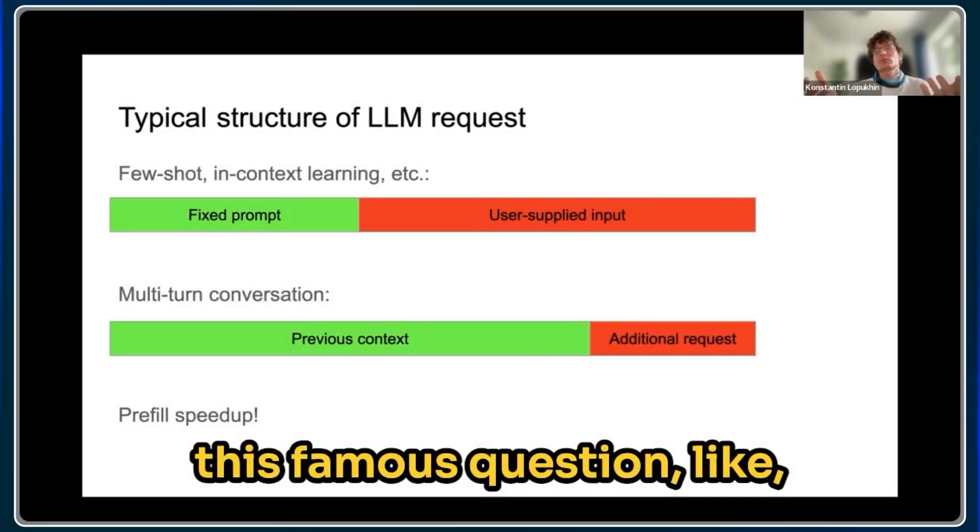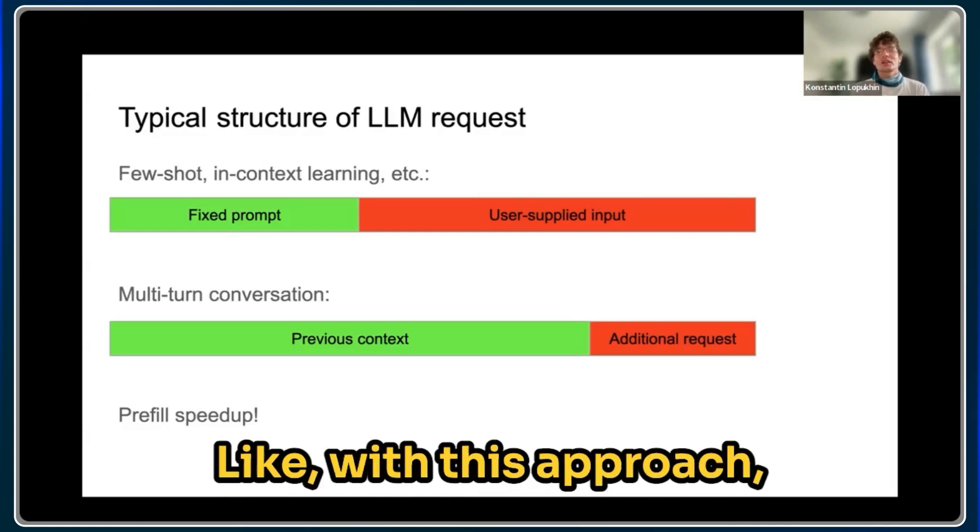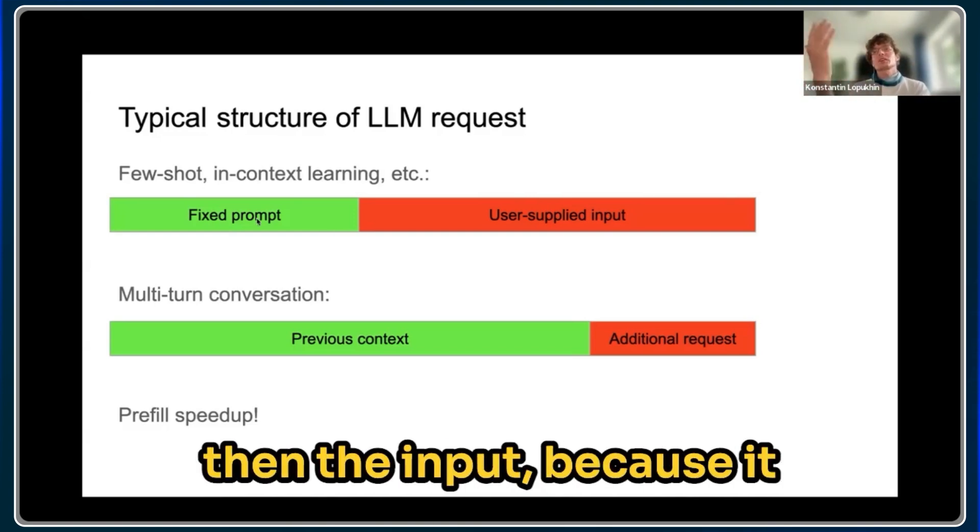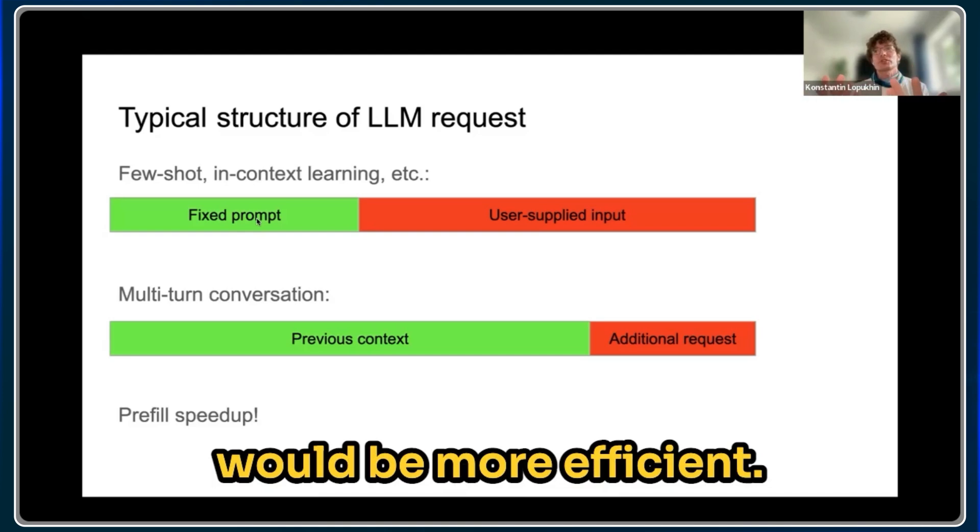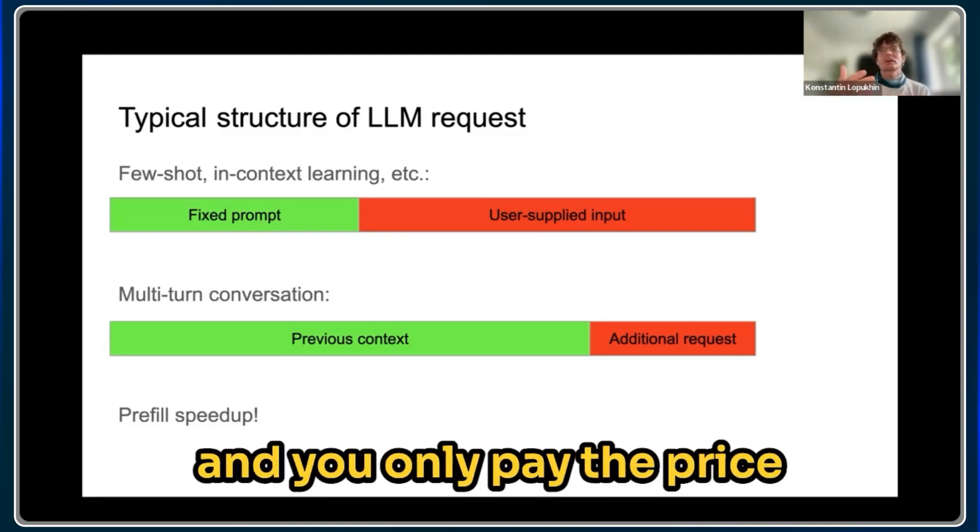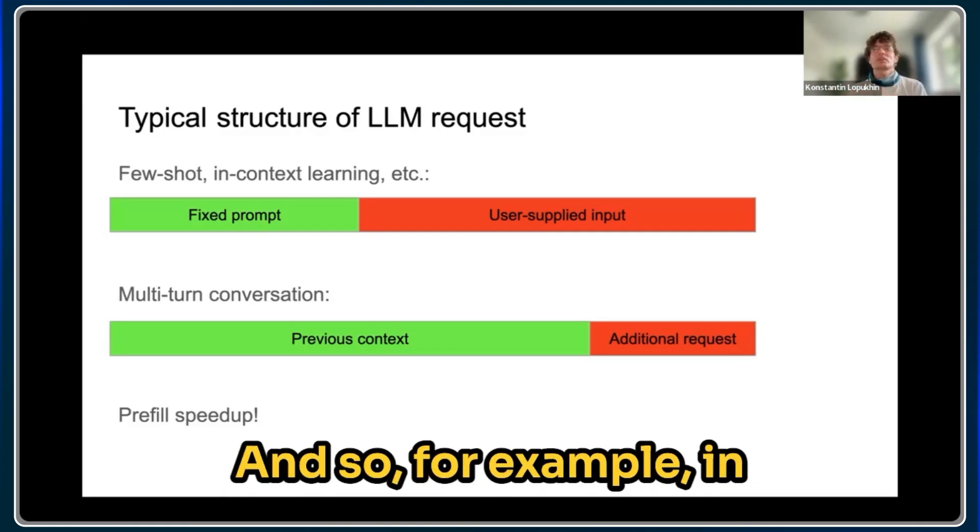For example, there's this famous question: do you want the input or the instruction first? With this approach, you obviously want the instructions first and then the input because it would be more efficient—you don't reprocess the instructions and only pay the price for processing the input.